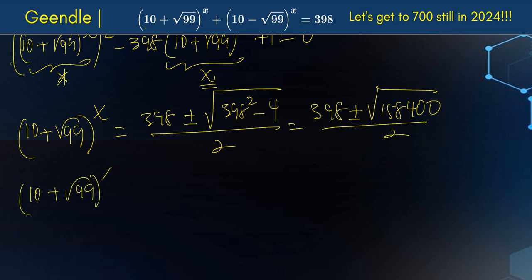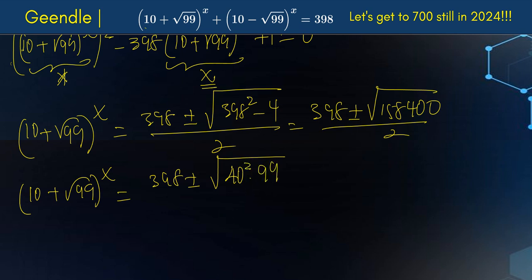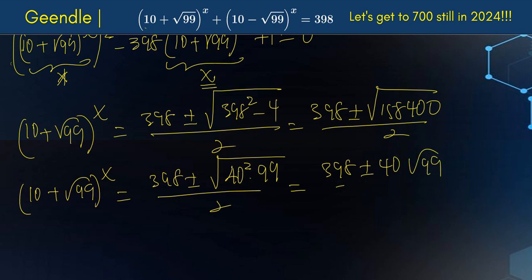This is where we simplify and get to something really interesting, which is going to save us a lot of time. So we have 398 plus or minus, and if you make some simplifications, we can write 158,400 as 40² times 99. So the square root becomes 40√99, giving us (398 ± 40√99) divided by 2. Notice that the 99 here is the same as what we have in our base — we're getting close to what we want.